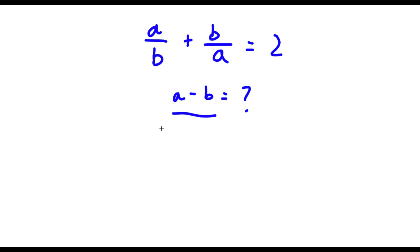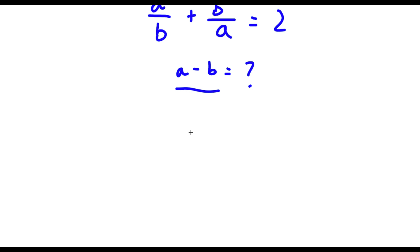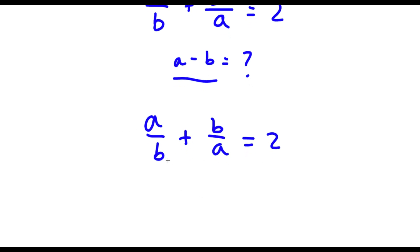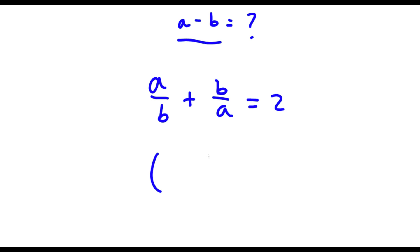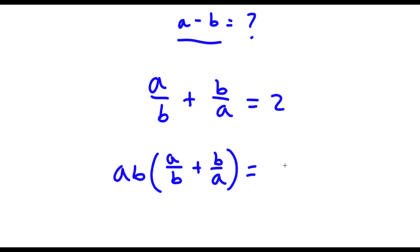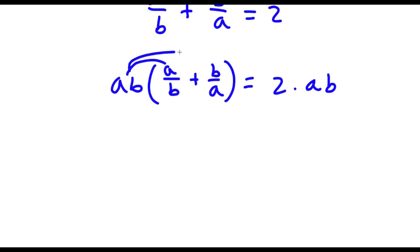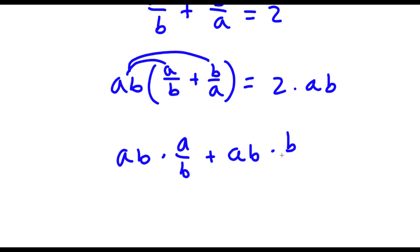So first of all I have a over b plus b over a is equal to 2, and now I'm going to multiply both sides by ab. So now I have a over b plus b over a times ab is equal to 2 times ab. Now if I distribute the ab, I get ab times a over b plus ab times b over a is equal to 2 times ab.